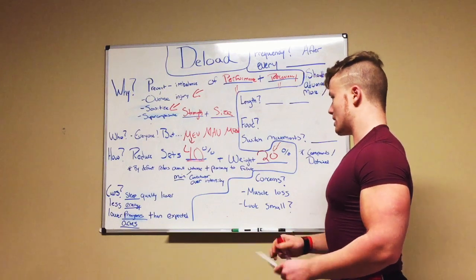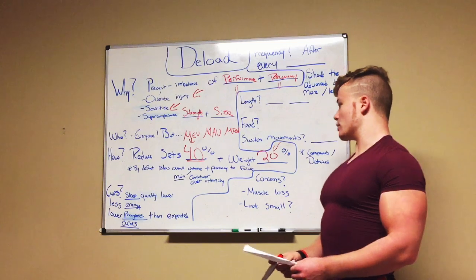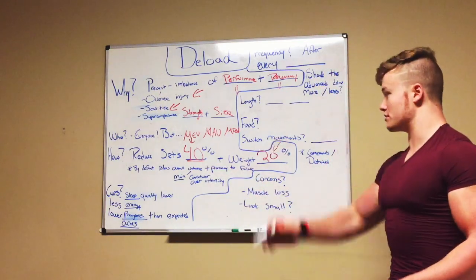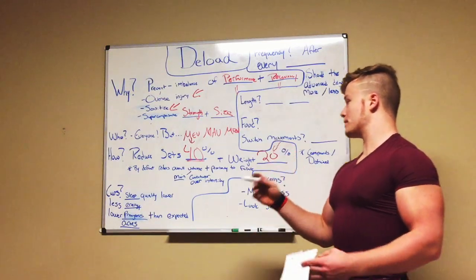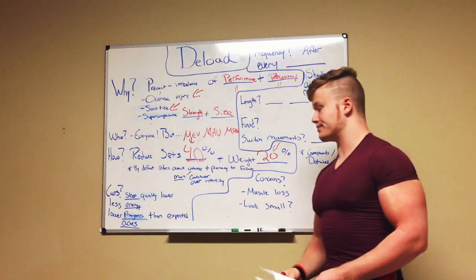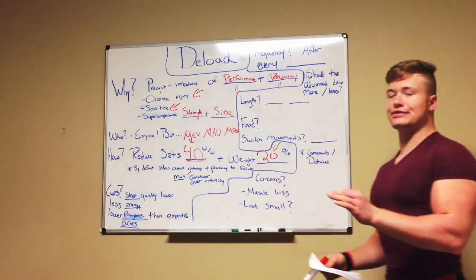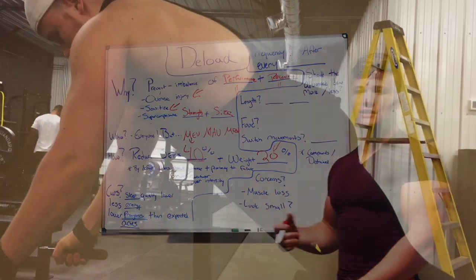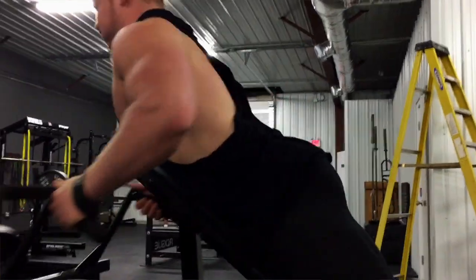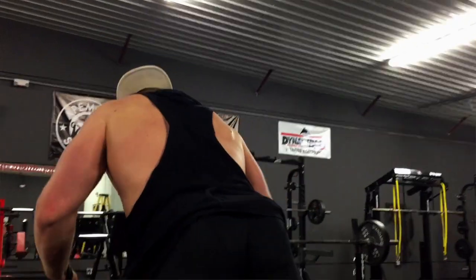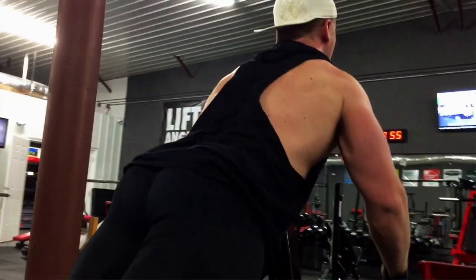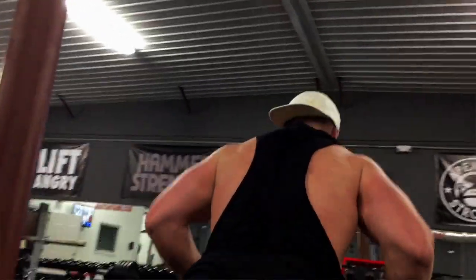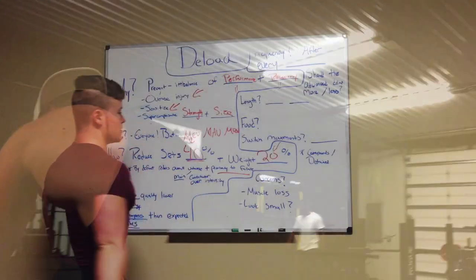That's kind of a different story for a different time. But 20% off of the weight, so 80% loads. By default, by reducing your sets and your weight, you're reducing your overall volume. Volume is sets times reps times weight. If you're reducing your sets and you're reducing your weight, you're reducing volume and volume is the main contributor to fatigue over intensity. A study done by Brad Schoenfeld indicated that volume was much more fatiguing than just intensity, which makes sense because intensity is just one of the variables that go into volume. By reducing your sets and your weight, you're reducing your proximity to failure.